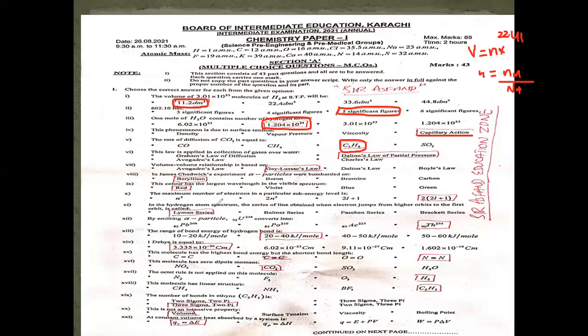The maximum number of electrons in SPDF subshells — if you want to find electrons in s, p, d, or f, the formula is 2(2L + 1).